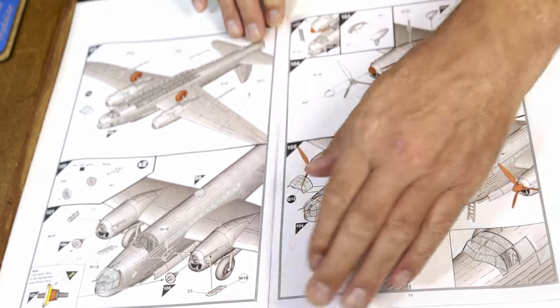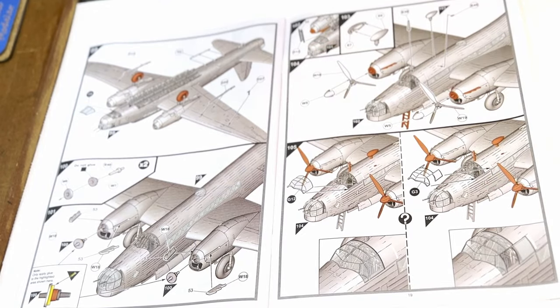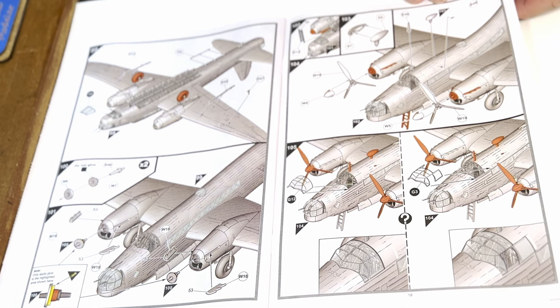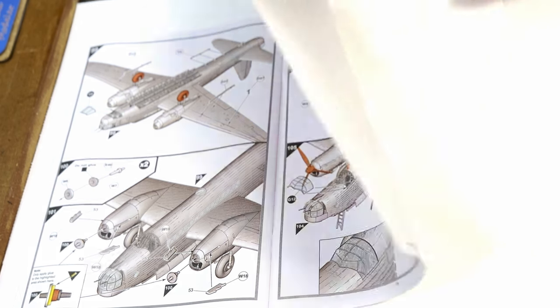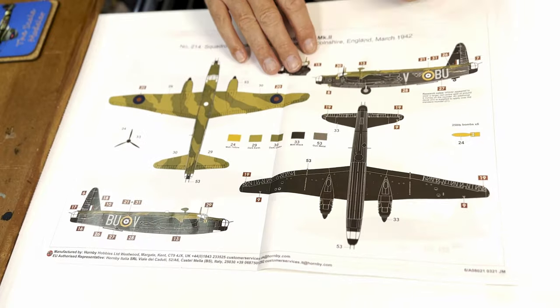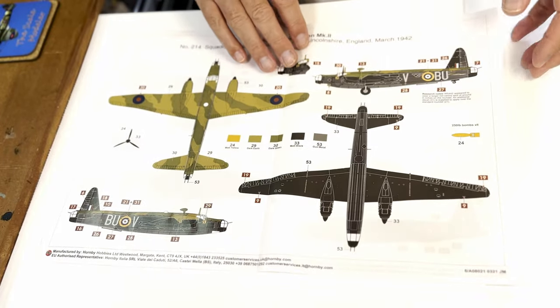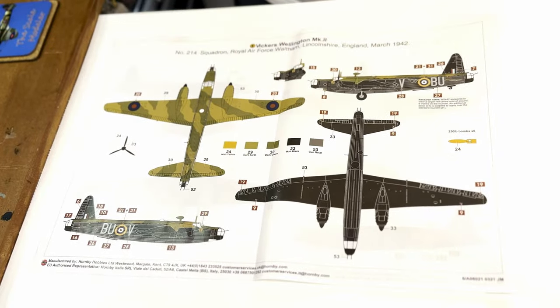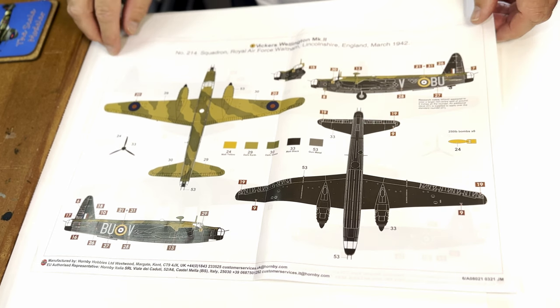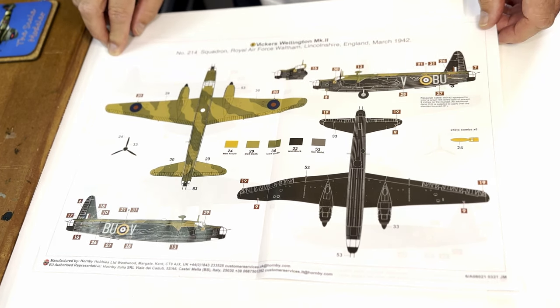You can have the main window in a closed position or open position. The Wellington comes in two schemes, similar but one's for 214 Squadron and the second one is for 305 Squadron.